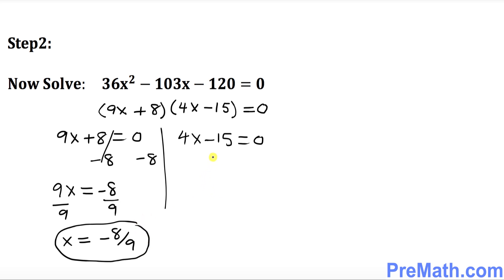And on this side, we're going to add 15 on both sides. What happened? This is gone. 4x equals to 15. I want you to divide both sides by 4. And x turns out to be how much? 15 over 4. So we got two solutions and those are our answers.